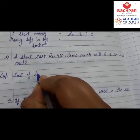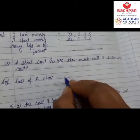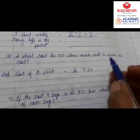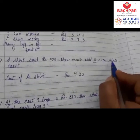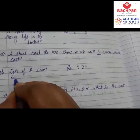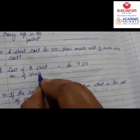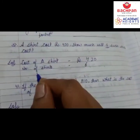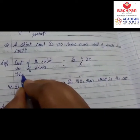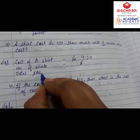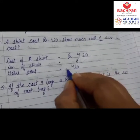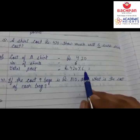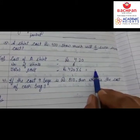Let's make the statement. First line: Cost of a shirt — one shirt's cost is rupees 420. Next line: Number of shirts — that is six. Next line: Total cost. Write here — rupees 420 multiplied by 6. Now we will multiply 420 by 6 and write the right answer.